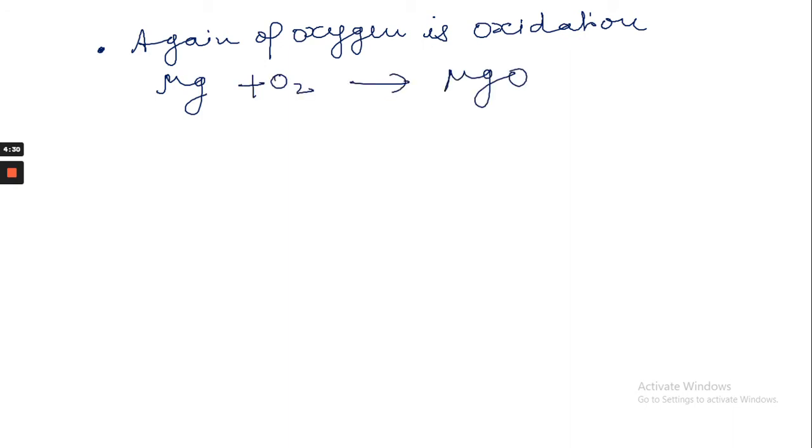Hello students, hope you are doing well in your studies. In previous lessons we have learned a gain of oxygen is called oxidation. An example for this: when magnesium burns in oxygen it gives magnesium oxide. Here magnesium is oxidized into magnesium oxide, so it's an oxidation reaction.